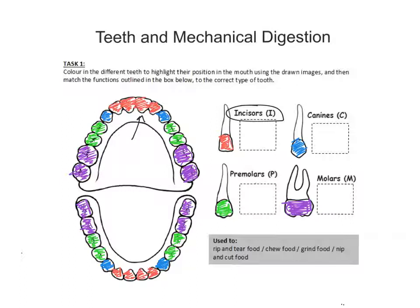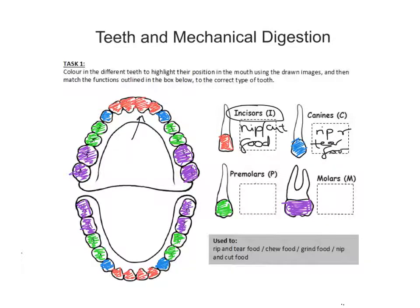So let's look at the functions of each tooth type. The incisors are designed to nip and cut food. Our canines are a lot sharper and these are the ones that rip and tear our food.